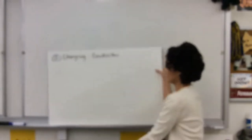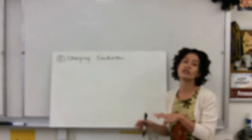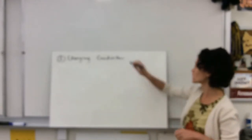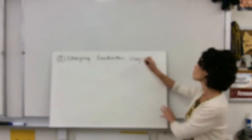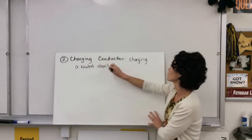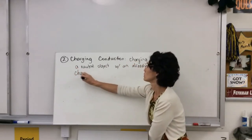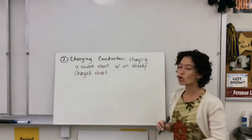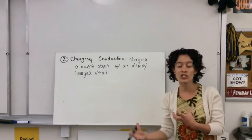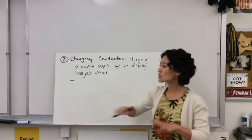The second method is charging by conduction. This is physically transferring electrons from one object to another — charging a neutral object with an already charged object. Charging by conduction is taking a neutral object and touching it with an already charged object, and what will happen is charges will redistribute such that they're spread out more evenly.